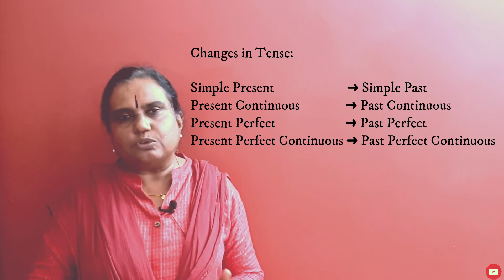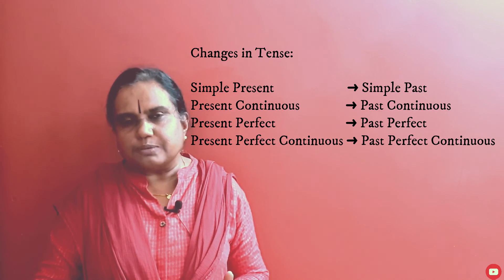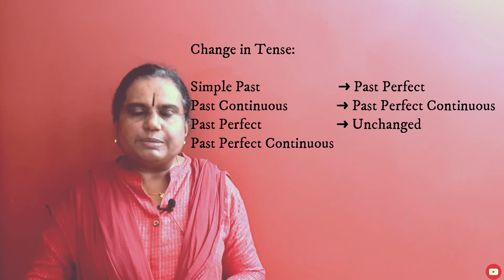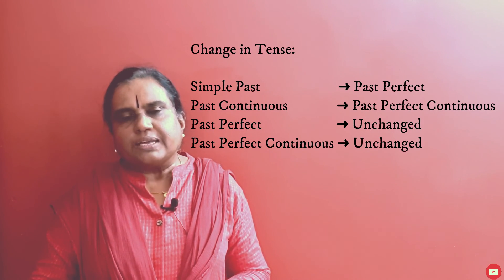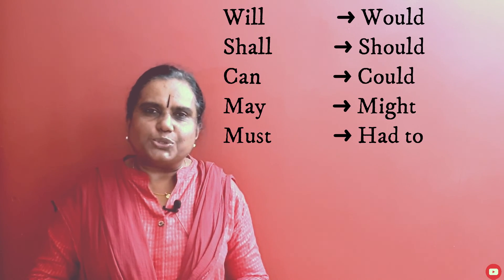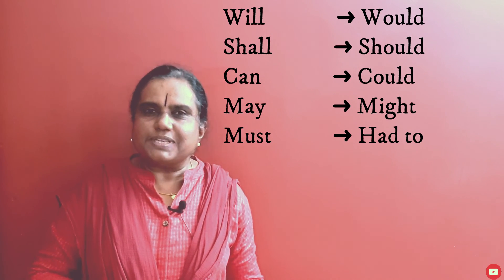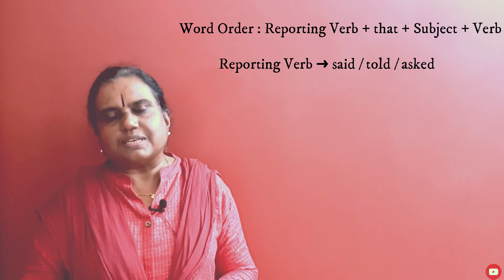Summary of tense changes: Simple present becomes simple past. Present continuous becomes past continuous. Present perfect becomes past perfect. Present perfect continuous becomes past perfect continuous. Simple past becomes past perfect. Past continuous becomes past perfect continuous. Past perfect and past perfect continuous remain the same. Will becomes would, shall becomes should, can becomes could, may becomes might, must becomes had to. The word order for a statement is: reporting verb + that + subject + verb.